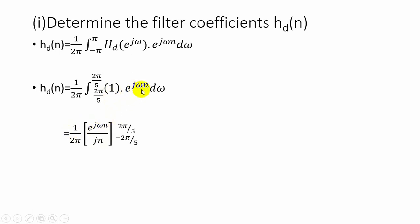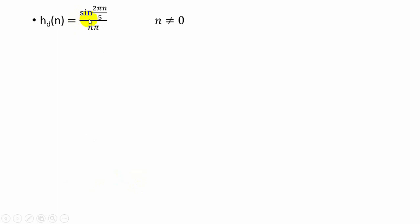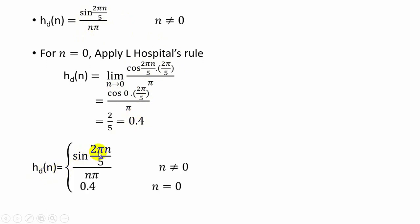Evaluating the integration of e^(jωn), ranging from −2π/5 to 2π/5, and applying the upper and lower limits: since (e^(jθ) − e^(−jθ)) / 2j = sin(θ), this gives sin(2πn/5). For n = 0, we apply L'Hôpital's rule: differentiating numerator and denominator separately, and applying the limit n → 0, gives cos(0) × 2π/5 divided by π. Therefore hd(n) = sin(2πn/5) / (nπ) for n ≠ 0, and equals 0.4 when n = 0.